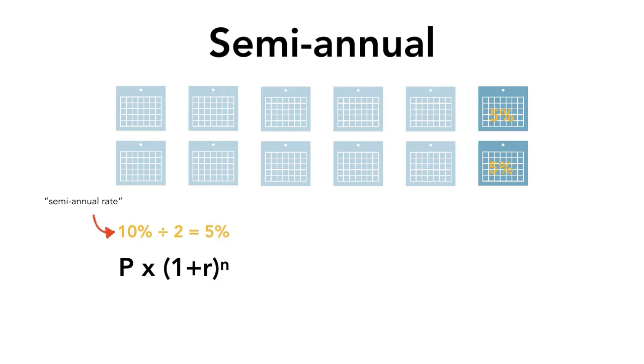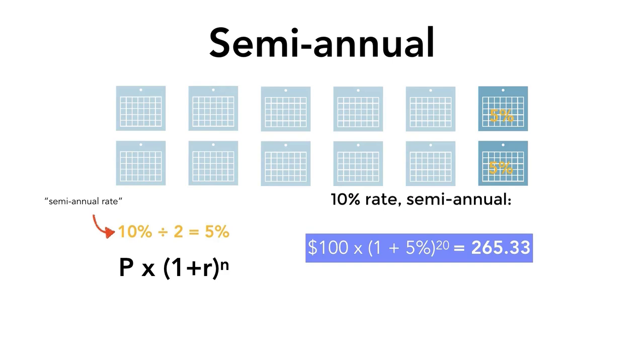Still using our example of $100, if you want to calculate your account balance after 10 years of semi-annual compounding, you use the formula: 100 times (1 plus 5%) to the 20, which equals $265.33. Note here that we now have 20 compounding periods instead of 10. There are 20 six-month periods in 10 years.